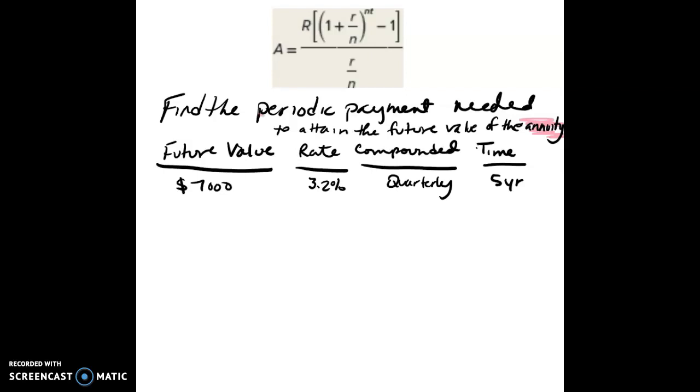Because it wants you to find the periodic payment. So in this formula, which variable is the periodic payment? It was the capital R.